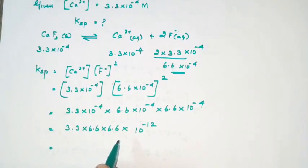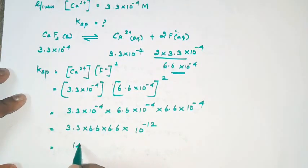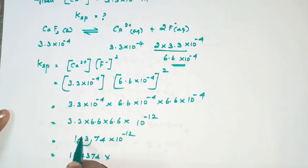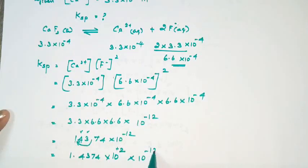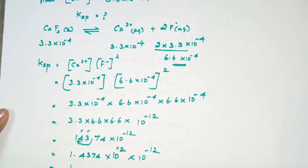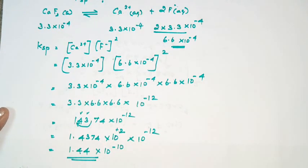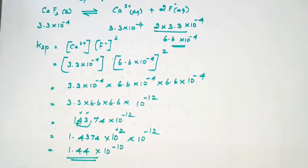Multiplying the numbers: 3.3 × 6.6 × 6.6 = 143.74. So Ksp = 143.74 × 10⁻¹². Converting to scientific notation: 1.4374 × 10⁻¹⁰, which rounds off to 1.44 × 10⁻¹⁰. So this is the Ksp value for calcium fluoride. Sariya?